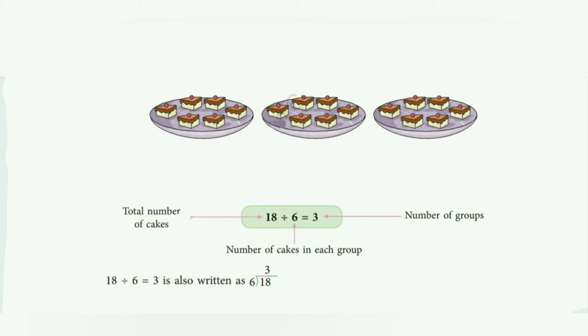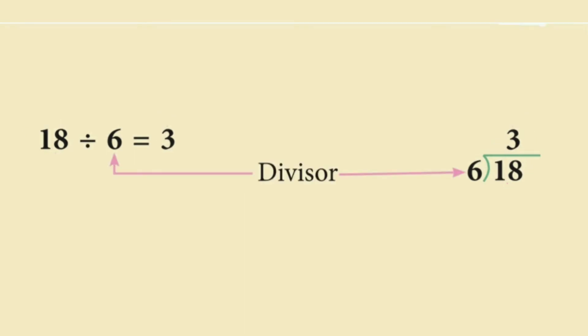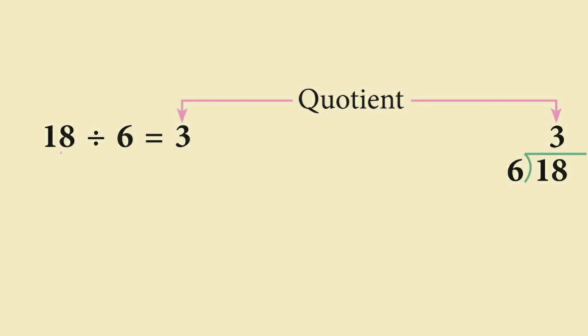The number of groups is 3. 18 divided by 6 equals 3. So in this division fact 18 divided by 6 equals 3, this 18 is called dividend, 6 is called divisor, and 3 is called the quotient.